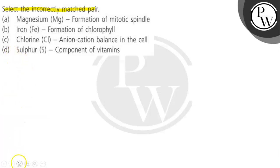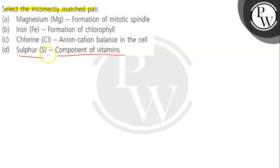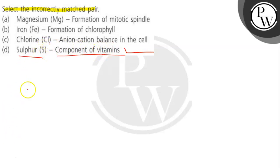So here option number D is given, that is sulfur. Sulfur is generally linked with the components of vitamins — it is found as a main element in different kinds of vitamins. So this statement is correct.